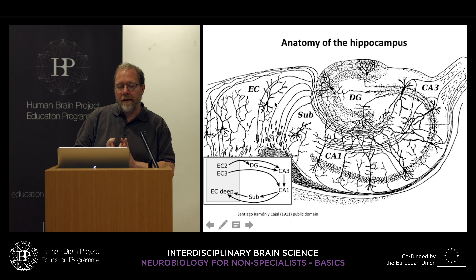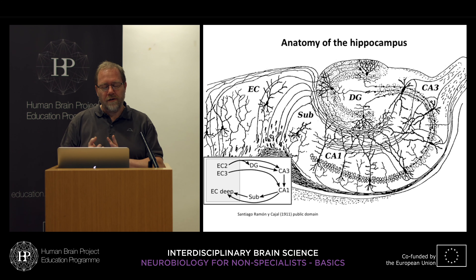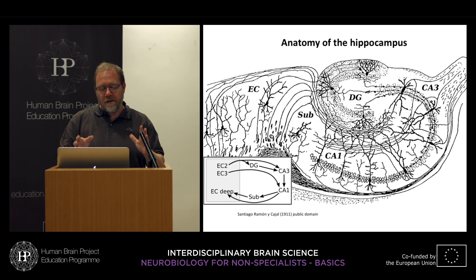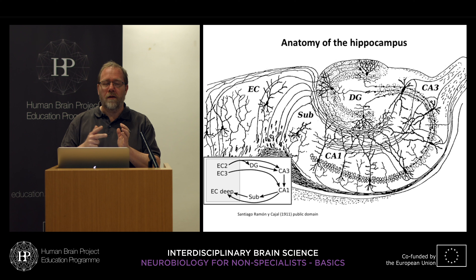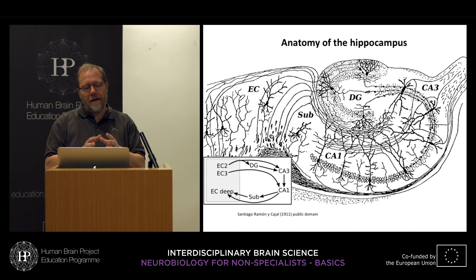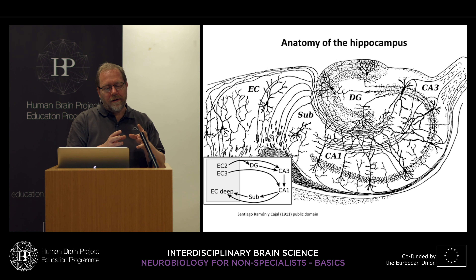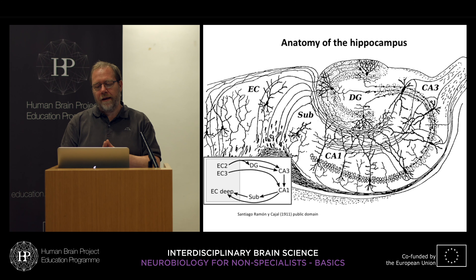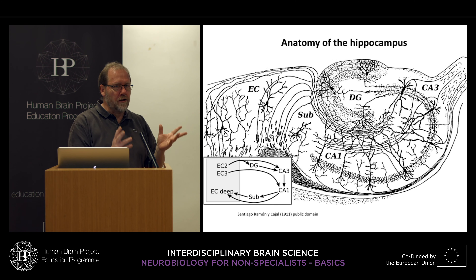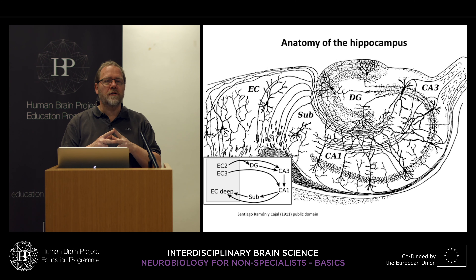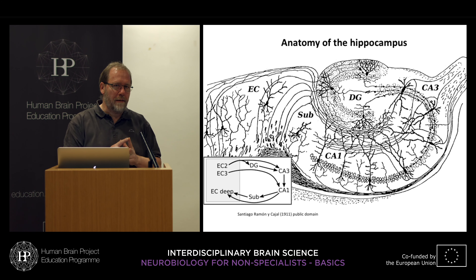From CA1 there is innervation of the subiculum and the entorhinal cortex again — it's a circuitry. This circuitry underlies a lot of modulation, with a number of streams of information coming together in the hippocampus. The hippocampus is part of the limbic system, underlying stress responses, emotional control and more. It is a very dynamic and important structure for spatial orientation; the dorsal hippocampus is crucial for spatial learning and memory.